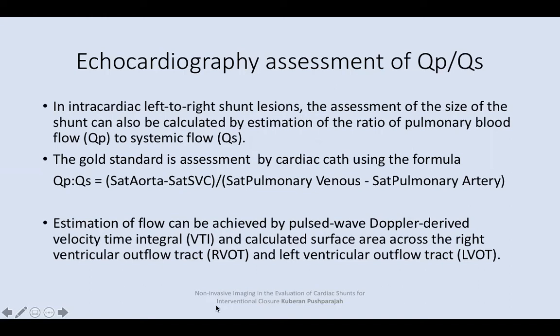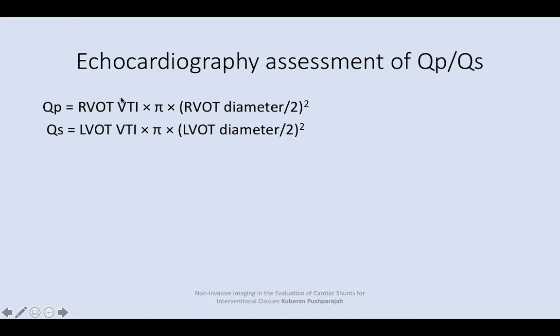We can measure it using echo by making four measurements: RVOT VTI, LVOT VTI, RVOT diameter, and LVOT diameter. The machine should be loaded with this formula. So if you choose shunt and enter the RVOT VTI, then RVOT diameter and LVOT diameter, Qp/Qs should be calculated automatically.